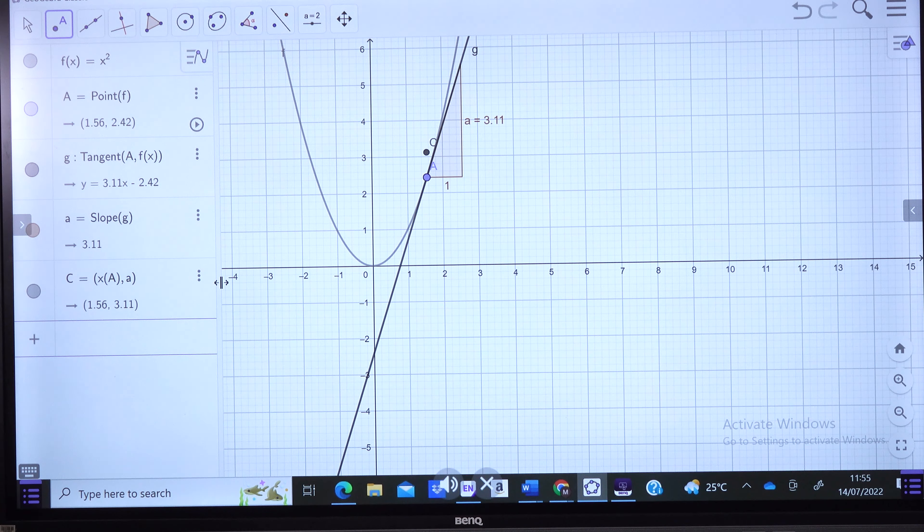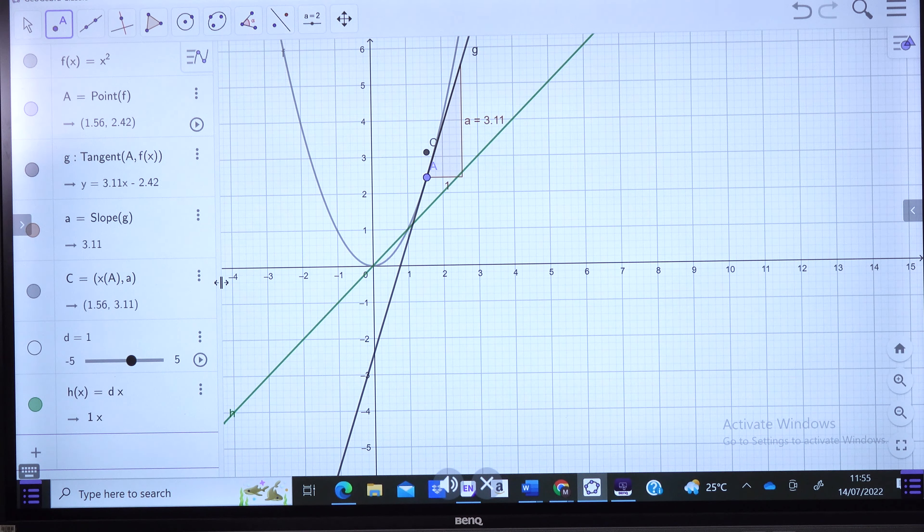Now, finally, suppose we have another function that we are naming as h of x, which is the same as dx. We are going to have another line drawn.